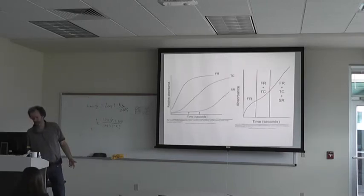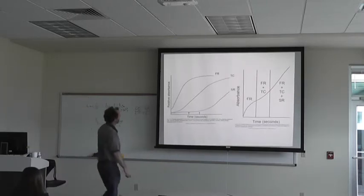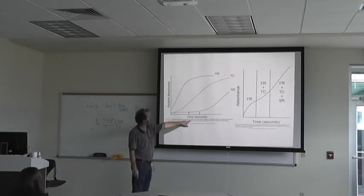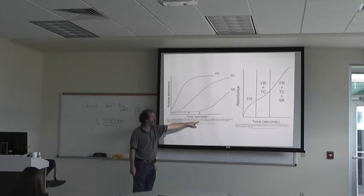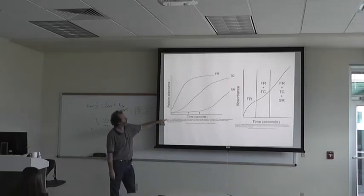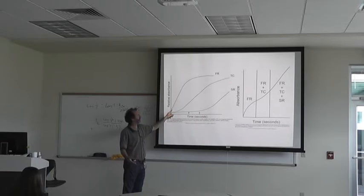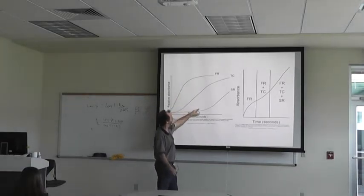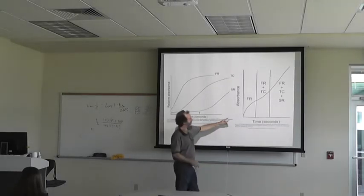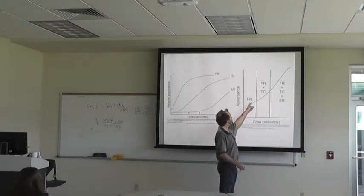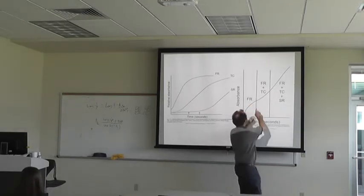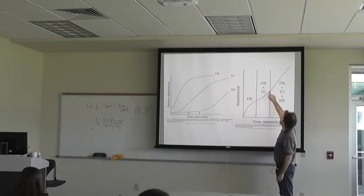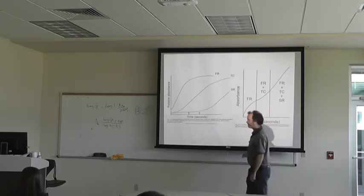Here's an example the book shows: relative absorbance versus time curves of the alkaline picrate reaction for creatinine. You have fast reactants and slow reactants and then the total creatinine, which sum together. You get a curve with an increase in absorbance really fast, then a slower absorbance which is the point of interest because it contains the total creatinine.